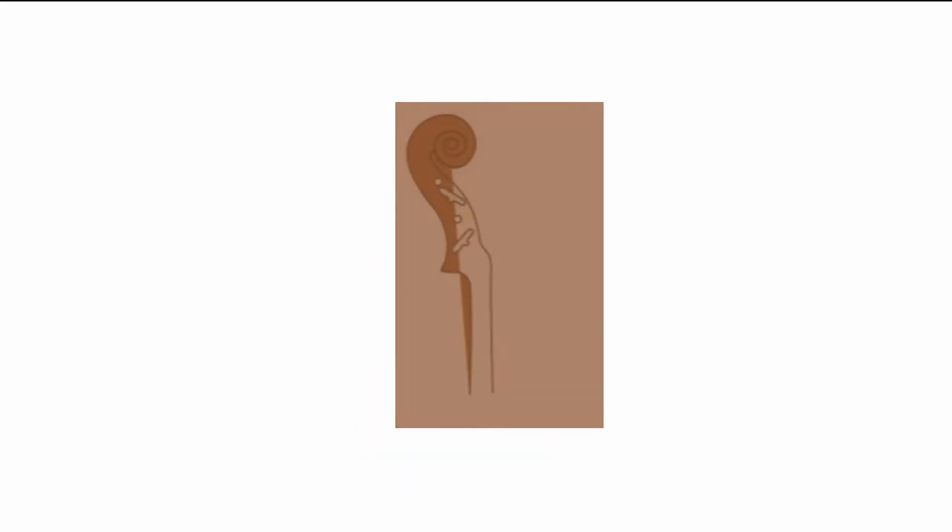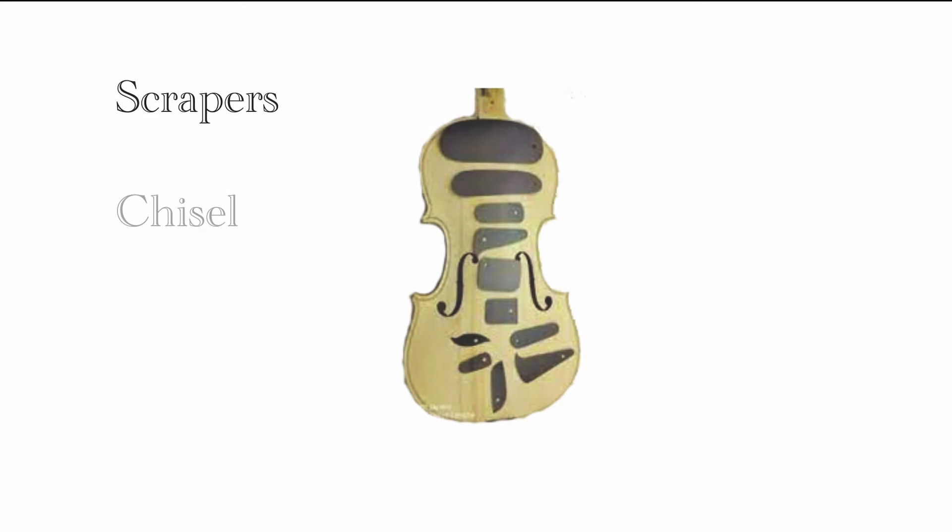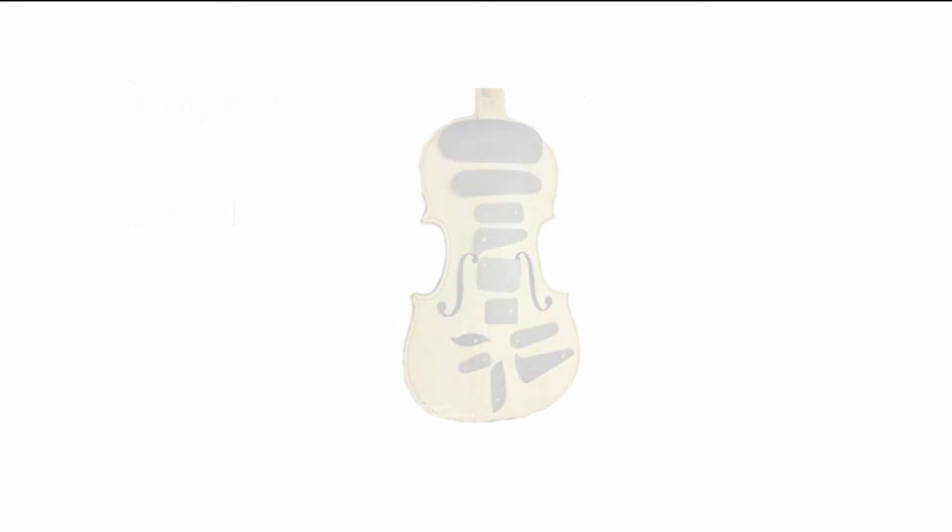As the cello is set to dry, the neck is formed. The carver takes a large maple block and carves the neck, peg box, and scroll roughly by hand. The carver usually uses gouges and a chisel as their main tools, but there are many tools that can be used.